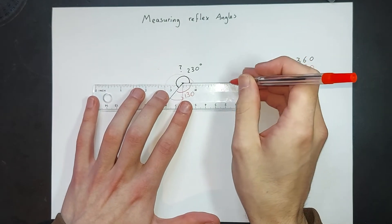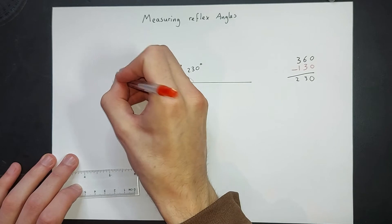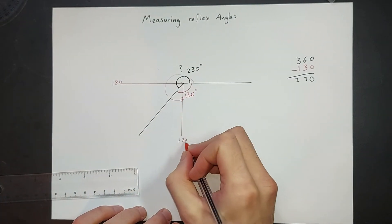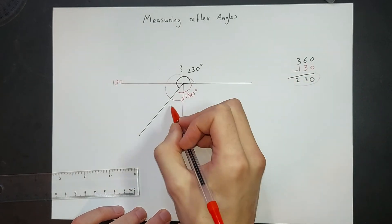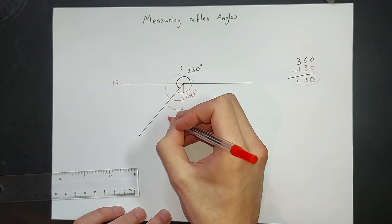If we were to turn 180 degrees, that would be there. So does it look, if this was 270 degrees, and we're saying it's 230 degrees, that means this angle here must be 40 degrees.